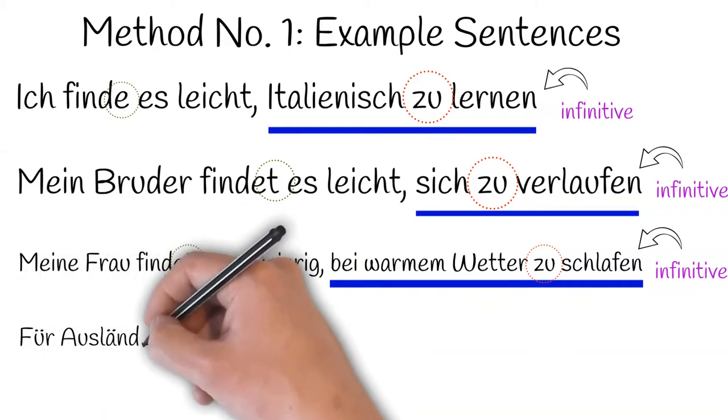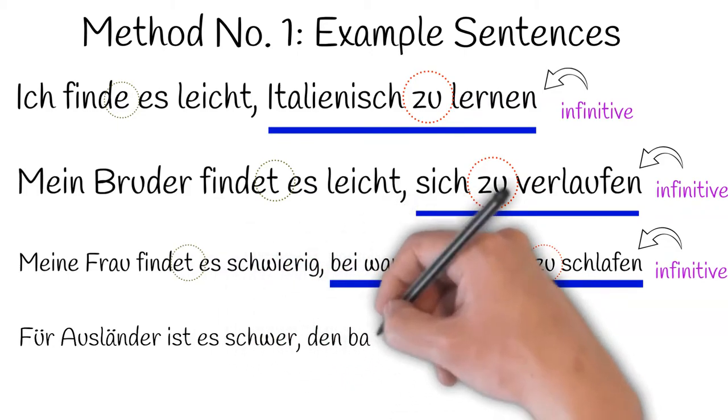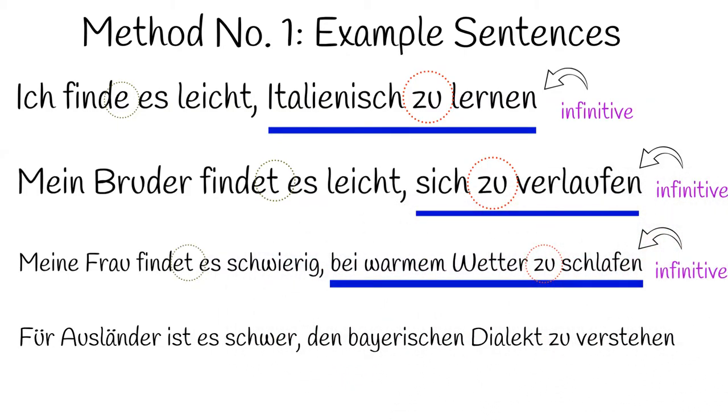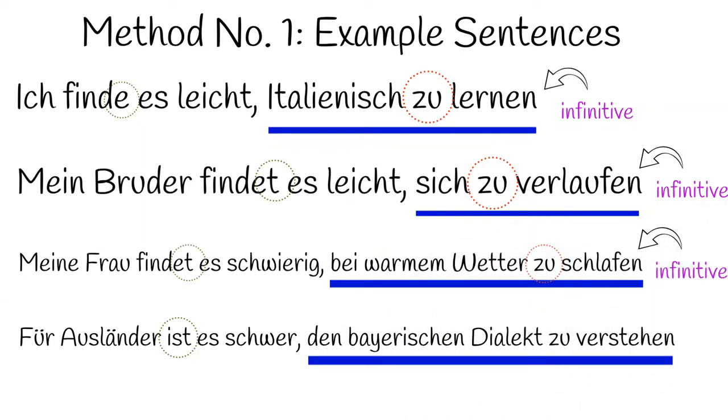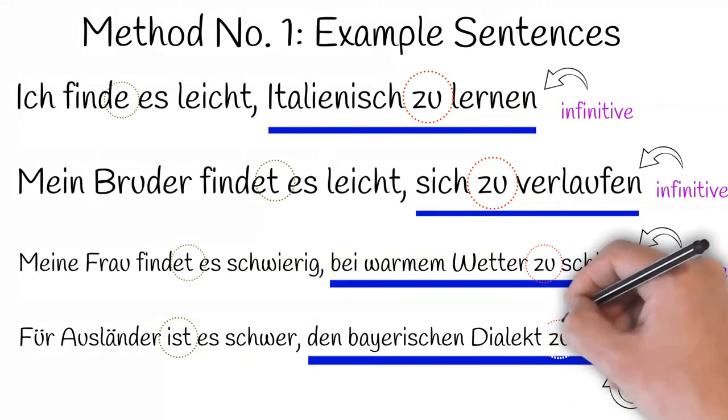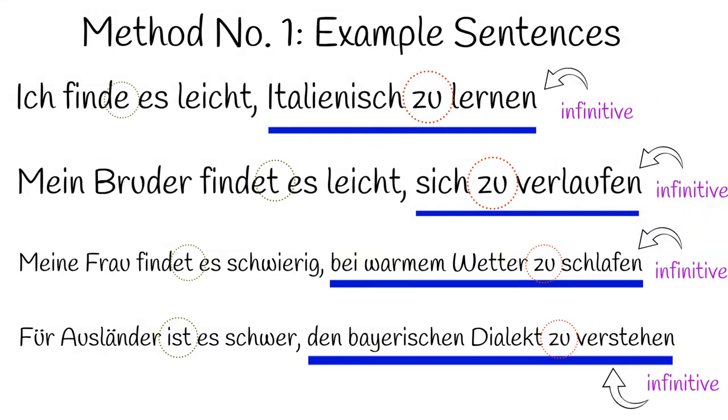Fourthly, für Ausländer ist es schwer, den bayerischen Dialekt zu verstehen. For foreigners, it's hard to understand the Bavarian dialect. This time I've used a different verb, namely sein, but I've conjugated it with the same person, third person singular, because it's coupled with es and we still have a zu clause in the second half which is unchanged. We might call it infinitival. It has its unconjugated infinitive verstehen, preceded by zu, preceded by all the other information, in this case the direct object, den bayerischen Dialekt.